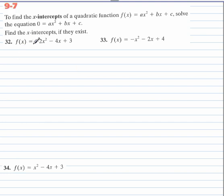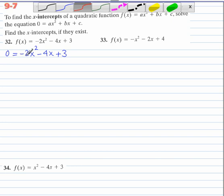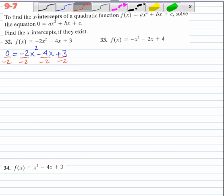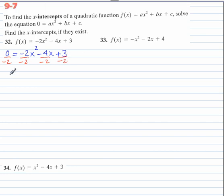Let's do number 32. This is not factorable. Once we set it equal to 0, we're going to complete the square. So let's first divide both sides by A so that A is 1. So we get x squared plus 2x minus 3 over 2 is equal to 0.